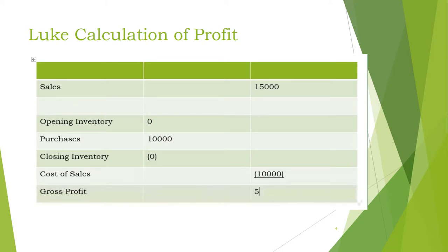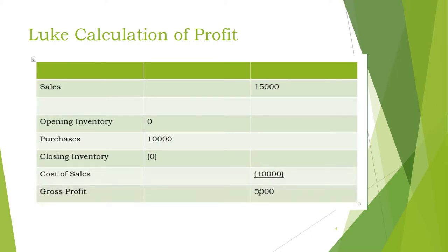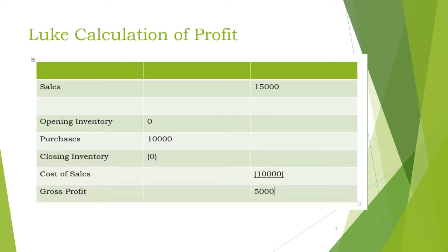That gives him a gross profit of 5,000. When you come later, you'll find he has other costs like depreciation — the spreading of the cost of his fixtures and fittings — electricity, gas, and workers. But for now, we're just looking at gross profit: 5,000. Please don't forget that profit because it represents a liability of the business to the owner — it has to go in the statement of financial position, otherwise it won't balance.